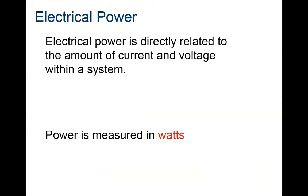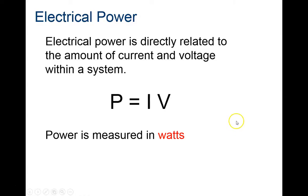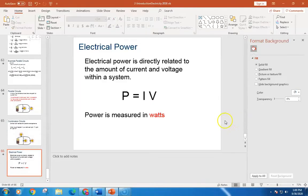The last equation for today is electrical power: P equals IV, where P is power measured in watts, I is the electrical current, and V is the voltage drop being used. That's where we'll stop today. Use these examples when doing your homework, and I'll post the PowerPoints so you don't have to search through the whole video to find them.